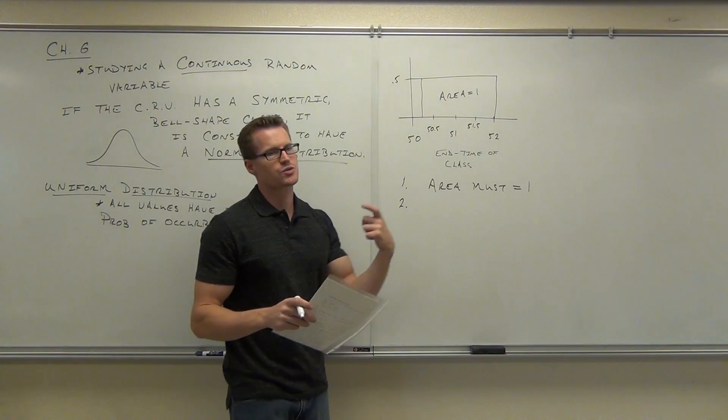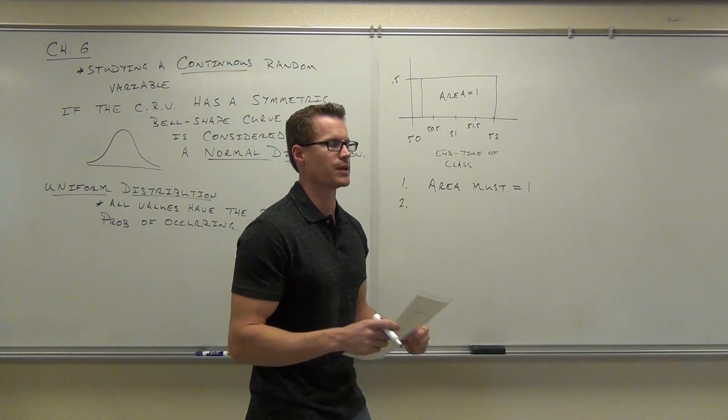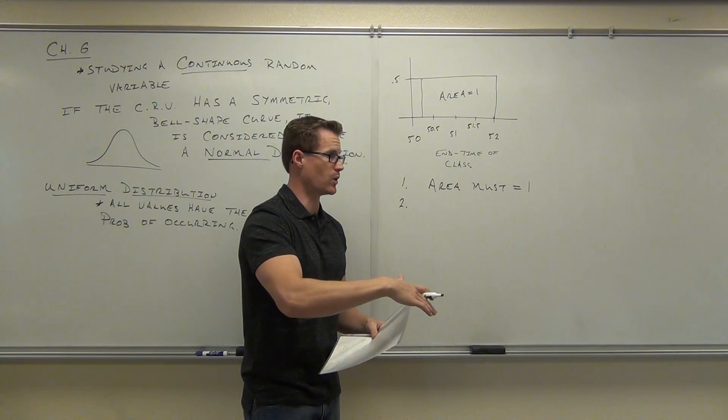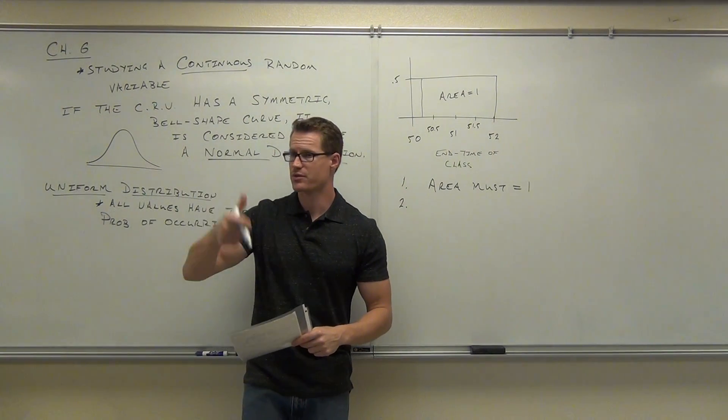If our area equals 1, we're going to associate it directly in a 1-to-1 correspondence with our probability. Also, because we're associating this with a probability, the height of each individual value has to be less than or equal to 1. Can you ever have a probability that's greater than 1?